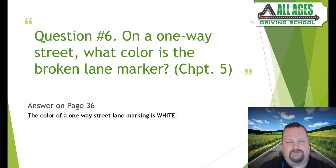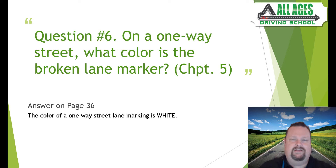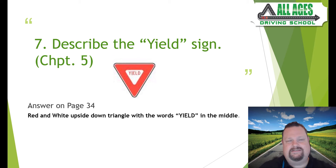Question number six: on a one-way street, what color is the broken lane marker? Chapter five, answer on page 36. On a one-way street the broken lane marker is a white line. Remember: a white line means traffic going in the same direction, and a yellow line means opposing directions. You may see that on your test.